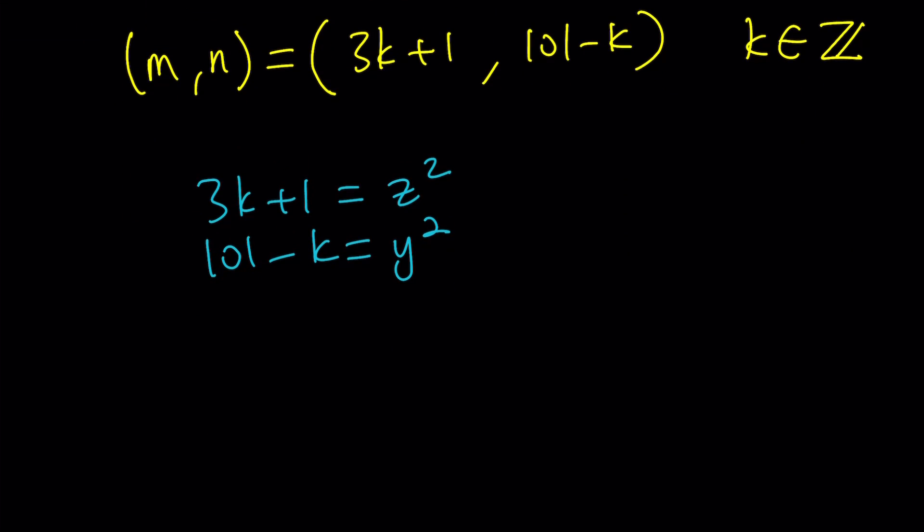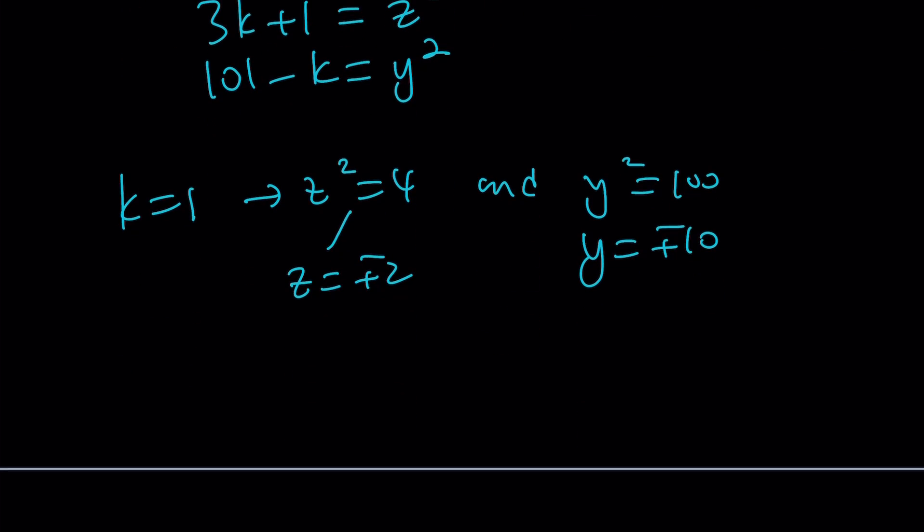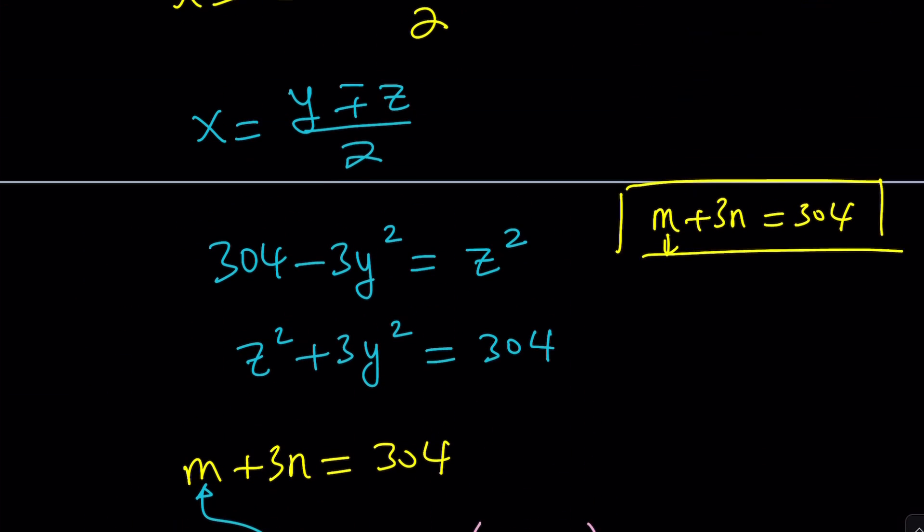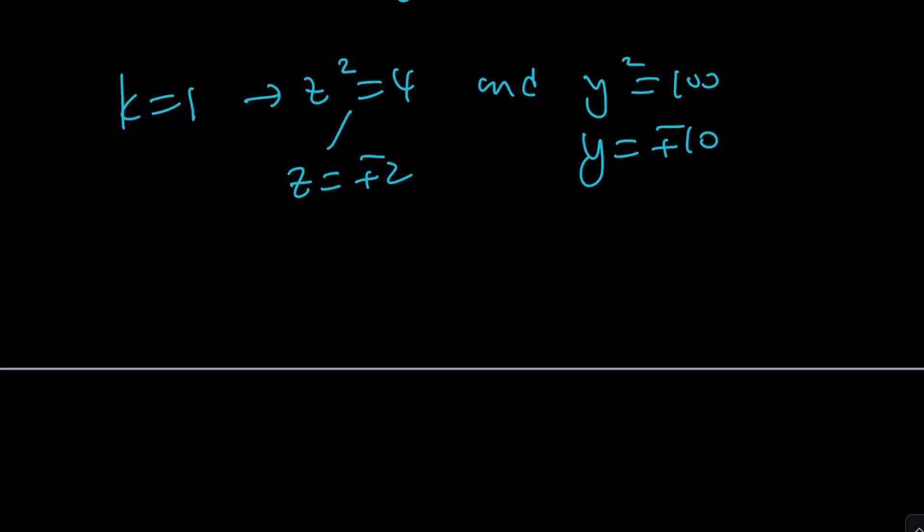So, you've got to find certain k values. For example, is k equals 1 going to work? Good question, right? And the answer is yes. Because if k is equal to 1, then we get z squared equals 4 and y squared equals 100. And from here, you get z equals plus minus 2 and y equals plus minus 10. Great. This gives you a bunch of solutions such as you can basically go with. And if you remember, x was y plus minus z over 2. So, x can be written as y plus minus z over 2.